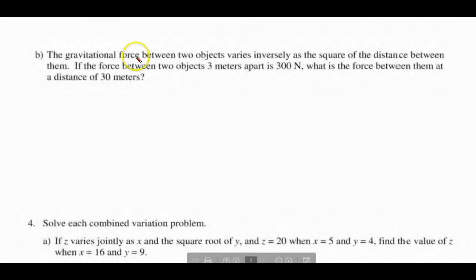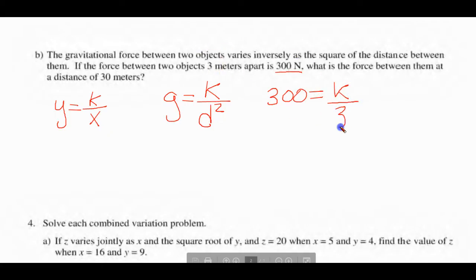In part B, we're still with inverse variation. Y equals K over X. They say gravitational force, which we'll call G, we have to put our K, varies inversely as the square of the distance. So this will be distance squared. There's your inverse formula where we've modified the letters. If the force of two objects three meters apart is this, our gravitational force is 300. We're going to put K there. And it's three meters apart, three meters, but what do we have to do to that distance? Square it.